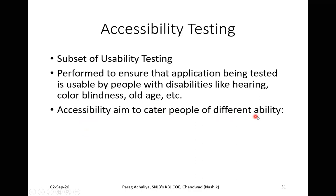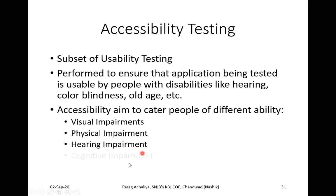Accessibility aims to cater to people of different abilities. The different ability categories include visual impairments, physical impairments, hearing impairment, cognitive impairment, and learning impairment. Visual impairment means the person who cannot clearly see things — the user who is visually impaired. Physical impairment means the user who has some physical issues or problems, like difficulty using their hands to access a system, where a physical organ is missing or impaired.